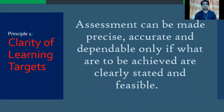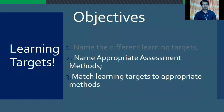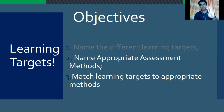Principle number one, which is clarity of learning targets, is very important because assessment can be made precise, accurate, and dependable only if what are to be achieved are clearly stated and feasible. So, we are done with objective number one. The learning targets are: first, knowledge; second, reasoning; third, skills; fourth, product; and fifth, affective.